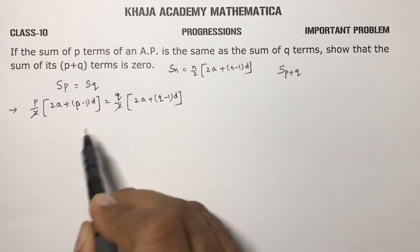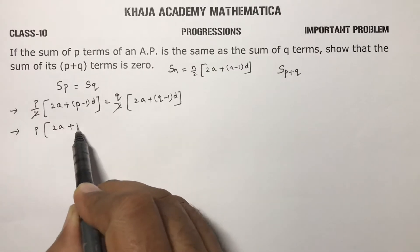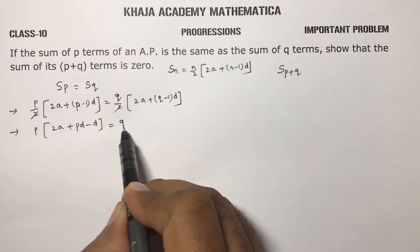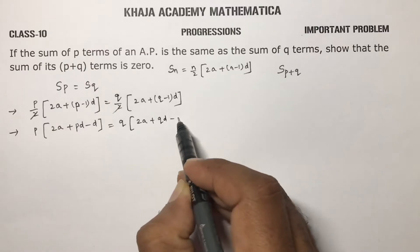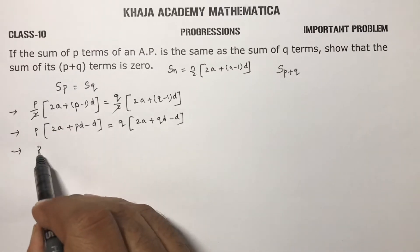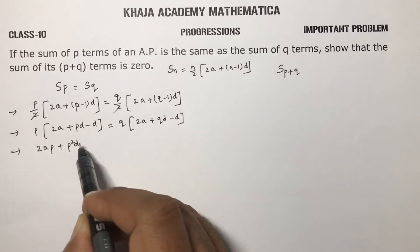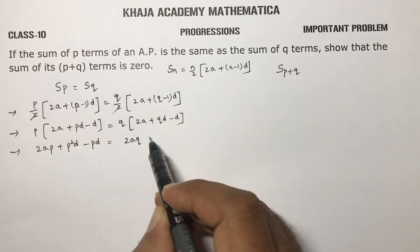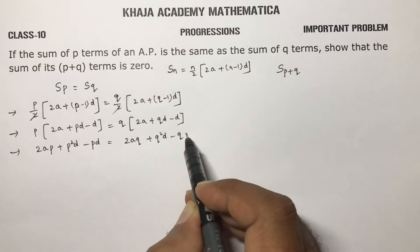Here 2 and 2 cancel, so we get p into 2a plus pd minus d, and q into 2a plus qd minus d. If we multiply out: 2ap plus p squared d minus pd, and 2aq plus q squared d minus qd.